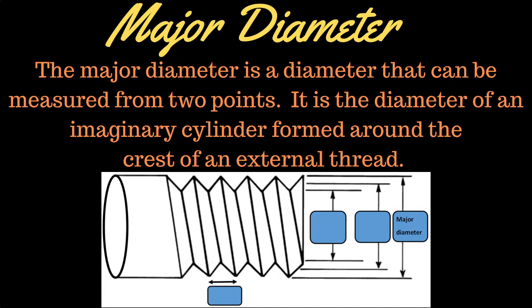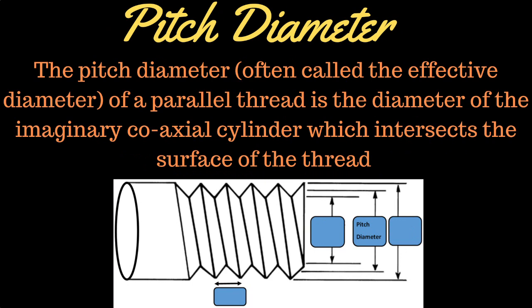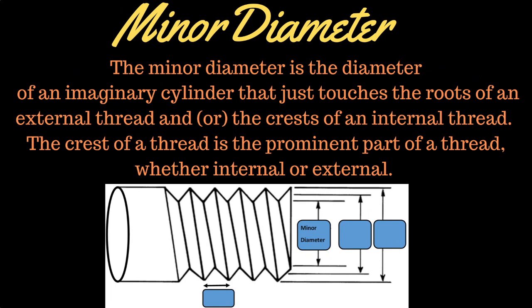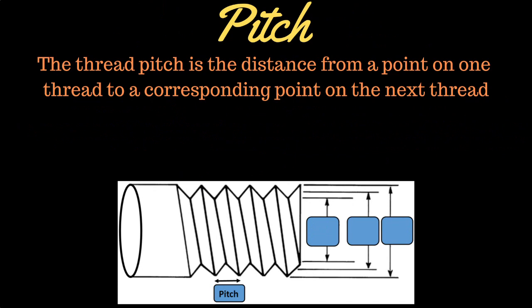Definitions you'll need to know: the major diameter is basically the outside of your thread. Pitch diameter is used in the calculations. Your minor diameter is the smallest inside thread. Pitch is the distance from a point on one thread to the corresponding point on the next.